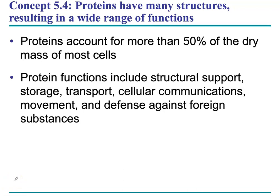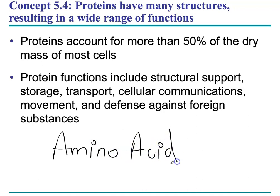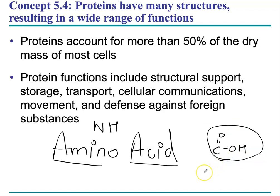We've finished two of them — lipids and carbohydrates — and we're coming to the third class of macromolecules. Proteins are polymers; the monomer of a protein is an amino acid. The name itself suggests what it is: there is an amine group (NH) and an acid group, which is a carboxylic acid. Proteins are one of the most diverse group of macromolecules in our body, capable of performing many different functions based on their structure, length, and shape.